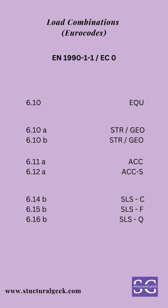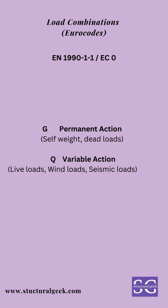The combinations we just discussed are focusing on strength. The next are serviceability requirements: 614b, 615b, and 616b, which are respectively for characteristic, frequent, and quasi-permanent cases. Now let's discuss each of these load combinations in detail, but first we need to see how in Eurocode the load cases are represented. The permanent actions — self-weight or dead load — are shown as G, and the variable actions, which could be live load or snow load, are shown as Q.